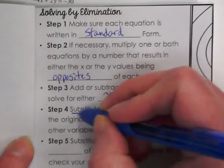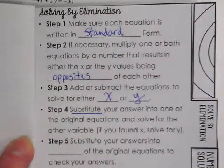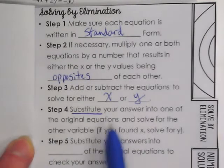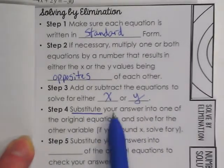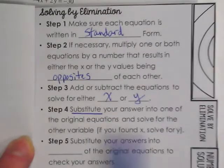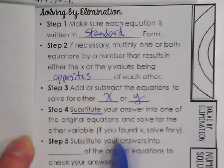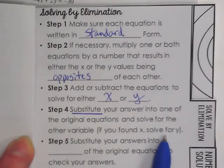And then we go back to, what's the first word in step four? Substitute. This is why I teach substitution first. Using elimination, once you've got an x or y, you go substitute it back in. So you're going to substitute your answer into one of the original equations and solve for the other variable. If you found x, you're going to solve for y. If you found y, you're going to solve for?